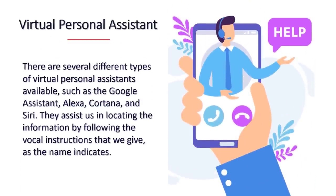Virtual personal assistants: there are several different types of virtual personal assistants available, such as the Google Assistant, Alexa, Cortana, and Siri. They assist us in locating information by following vocal instructions — such as play music, call someone, open an email, schedule an appointment, etc. These artificial intelligence-based virtual assistants rely heavily on machine learning methods. They capture our vocal instructions, transfer them to a server in the cloud, where machine learning algorithms decipher them, and then act in accordance with their interpretation.